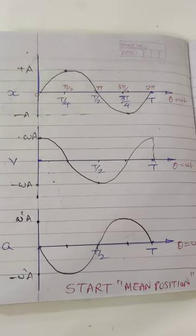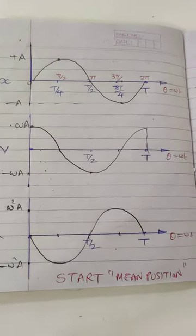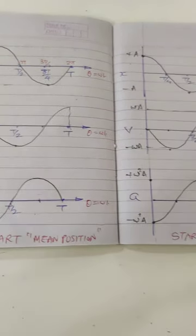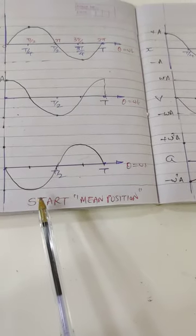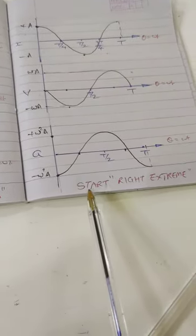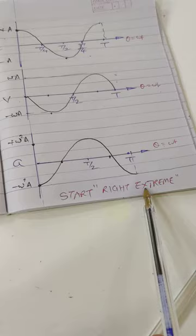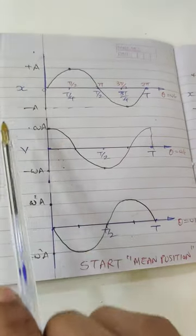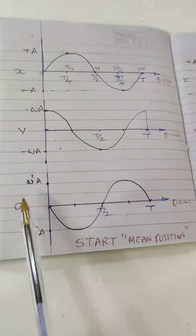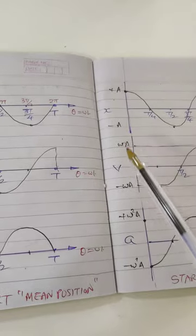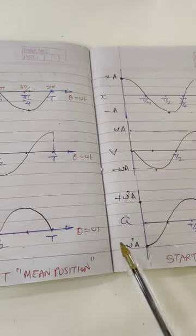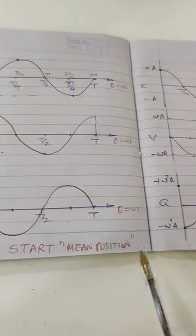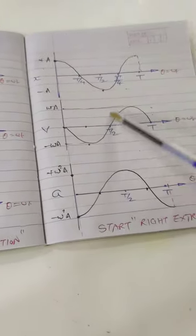In this question we have to do graphical representation of SHM. Only two cases are in the syllabus: when the particle starts from mean position and when the particle starts from right extreme. For each case, we need to draw three graphs: displacement, velocity, and acceleration.